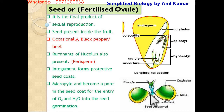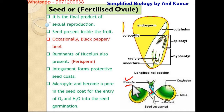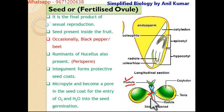The upper layer forms the epicotyl, which can be modified into the plumule, and the plumule forms the stem. The lower portion is named the hypocotyl, and the hypocotyl forms the radicle. Remember this in the dicot case.